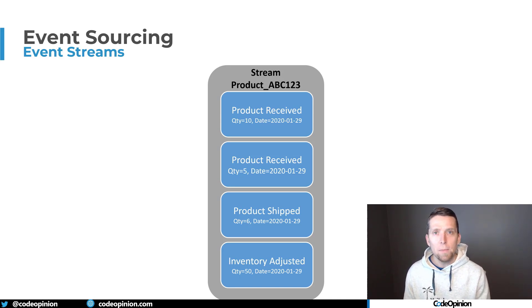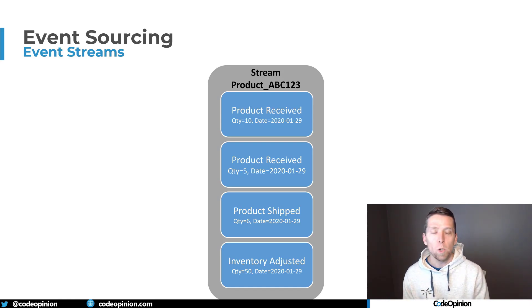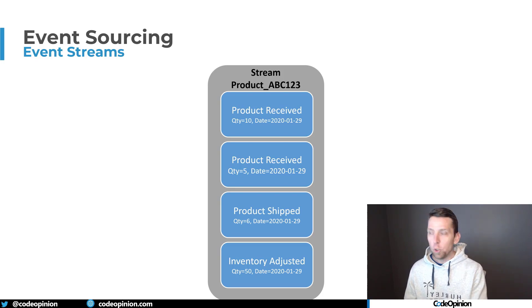When people realize this, their immediate reaction is: what happens if I have a stream — for example, product ABC-123 — that has thousands or hundreds of thousands of events? Isn't that going to be really suboptimal? That's going to take a long time to pull all that data and rebuild current state. While this is a fair, good question, there's an answer: snapshots. That said, it's an optimization you don't necessarily need often. In my experience, event streams are generally finite — they have some beginning and end, and the number of events is usually limited enough that no snapshot optimization is needed.